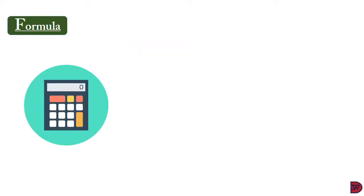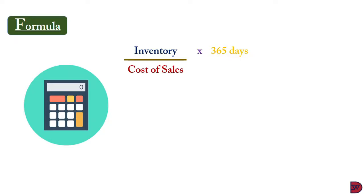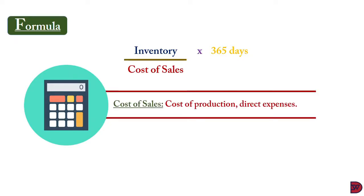The formula for inventory days is: inventory divided by cost of sales, multiplied by 365 days. We are looking at the number of days over a year — that's why you have the 365 days. Cost of sales, the denominator, is normally the cost of production or the direct expenses.